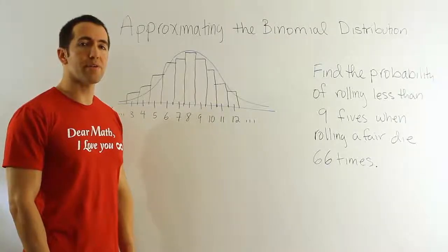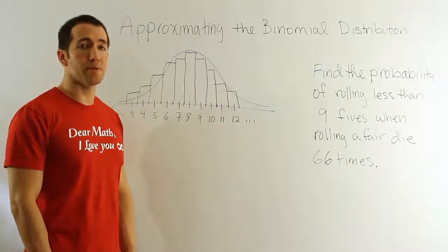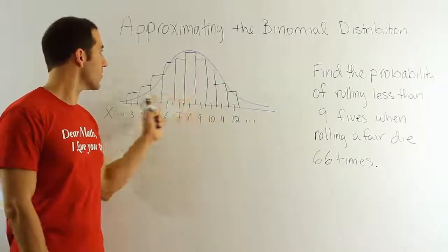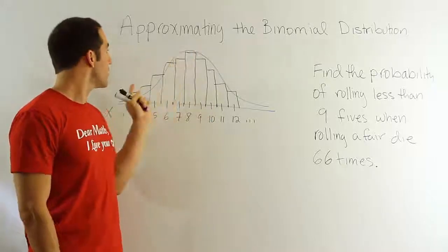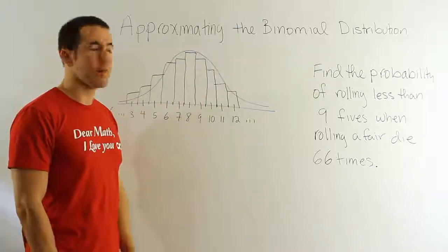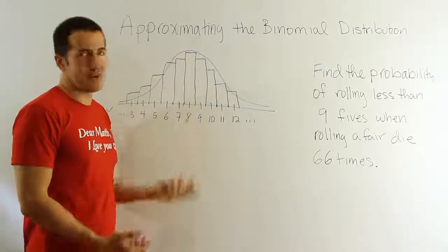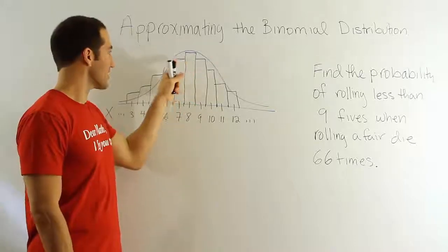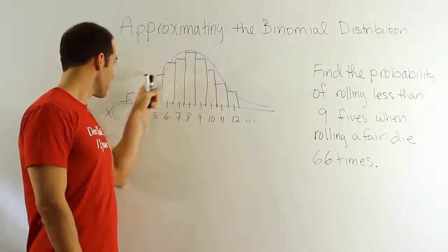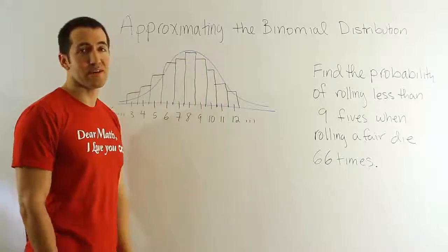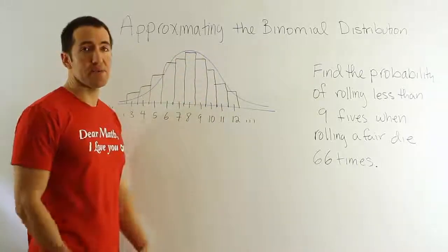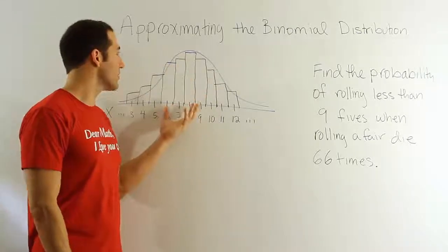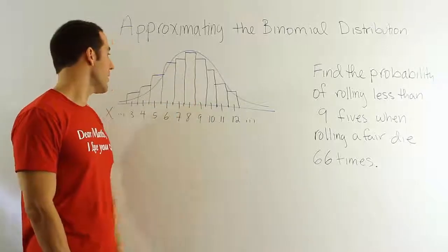This video looks at approximating the binomial distribution by the normal probability distribution. The discrete probability distribution, represented by black rectangles, is approximated by the normal distribution, represented by a blue bell curve. This is a by-hand drawing, so it's not perfect, but the rectangles usually intersect with the blue curve right in the middle. The idea is straightforward: we use the blue bell curve to approximate the probability distribution for the binomial curve.